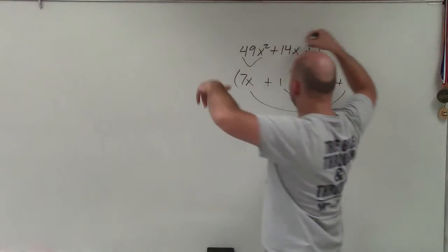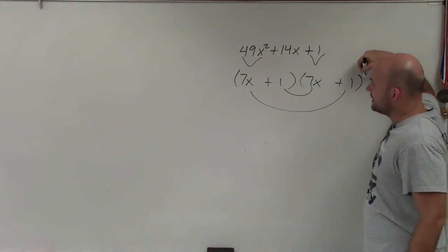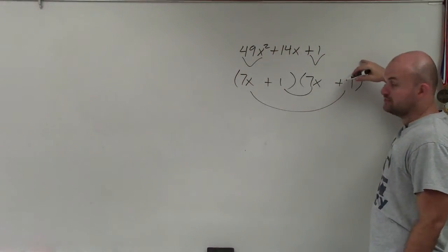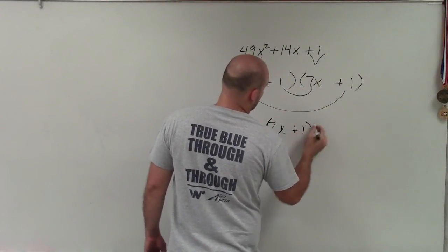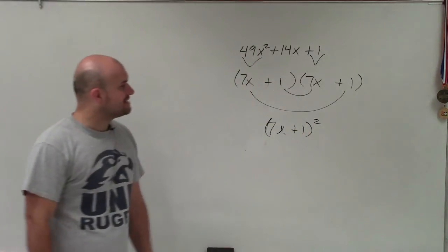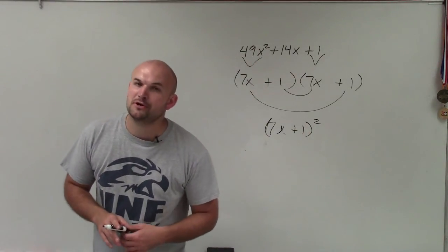So therefore, this is a perfect square trinomial that can now be factored into the product of two factors. And since these factors are the same, we like to write it as a binomial squared. So there you go, ladies and gentlemen. That is how you factor a perfect square trinomial. Thanks.